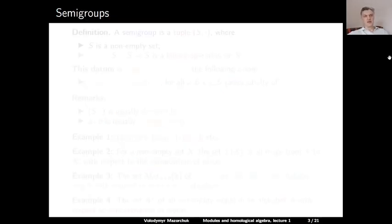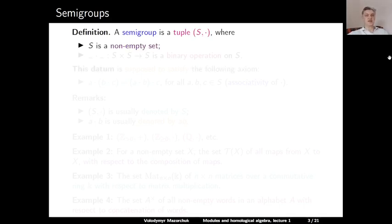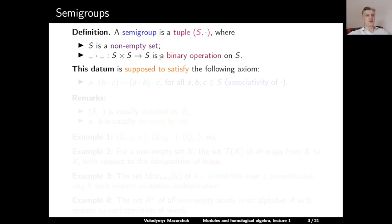We start with the most basic algebraic structure, that is a semigroup. A semigroup is a tuple which consists of two things: a non-empty set S, and a binary operation on S denoted by dot. It is a map from the Cartesian product of S with itself to S. This datum is supposed to satisfy the following axiom: our binary operation should be associative. This means that if we multiply some element A with the product of B and C, the outcome should be the same as if we multiplied the product of A and B with C.